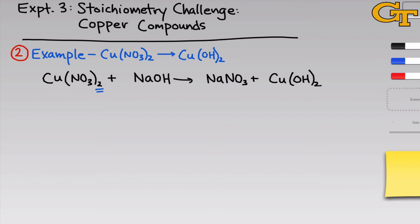To begin, we can notice that there are two nitrates within copper nitrate on the reactant side, but only one nitrate within NaNO₃ on the product side, so we need a coefficient of two in front of sodium nitrate. Similarly, there are two hydroxides within copper hydroxide on the product side, but only one hydroxide within NaOH on the left-hand side, so we add a coefficient of two in front of NaOH. Now we're fully balanced — there are two sodiums on each side, nitrate is balanced, hydroxide is balanced, and there is one copper atom on each side.